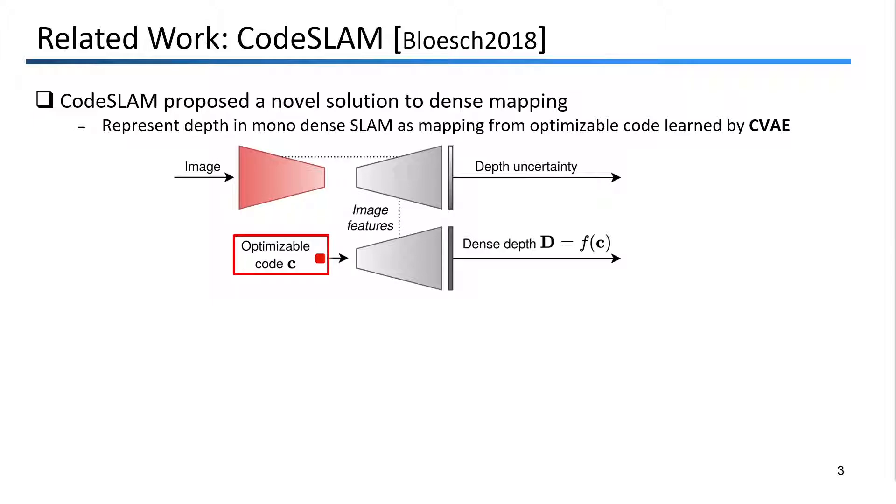The really interesting part is what you can do once you have an initial depth prediction. By treating the decoder network as a differentiable function of the code, we can actually use measurements from an external estimator system to refine the dense depth by only updating the code. In CodeSLAM, the measurements come from the dense SLAM system, and the Jacobian of the dense depth with respect to the code is needed to update their state in the nonlinear optimization framework.